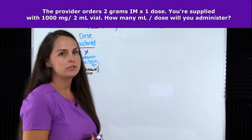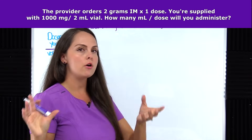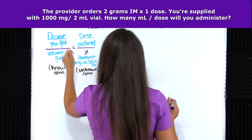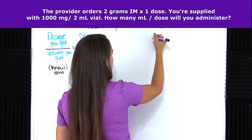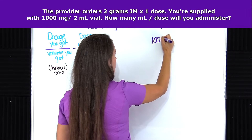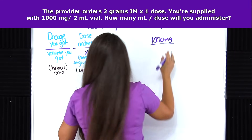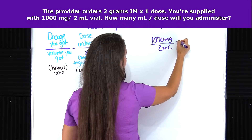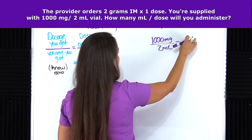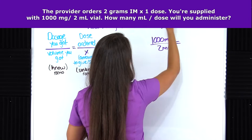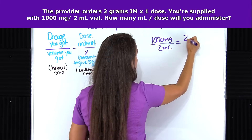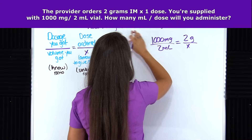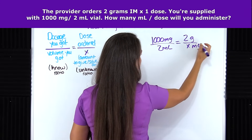Let's set up our ratios. The first ratio is our known ratio — what we're supplied with. The dose we have on hand is 1,000 milligrams, and the volume we have is 2 milliliters. That equals our unknown ratio: the dose ordered, which the provider ordered as 2 grams, over x — which is what we're solving for — milliliters per dose.